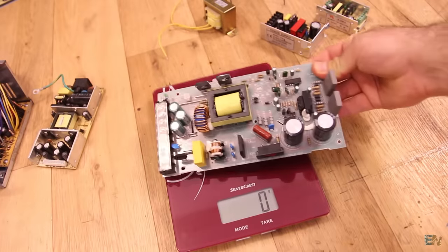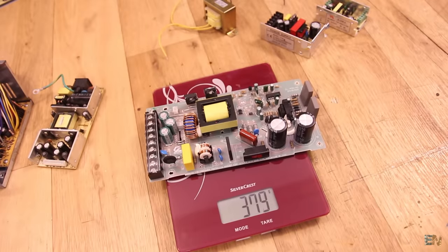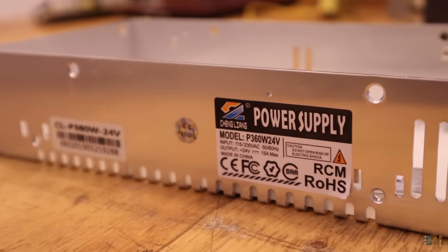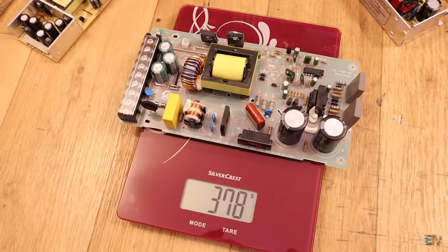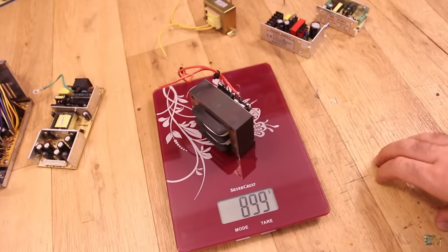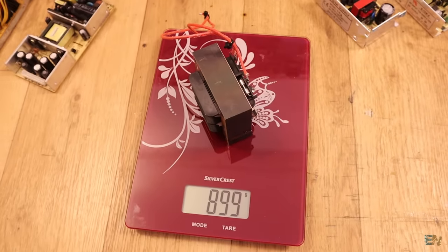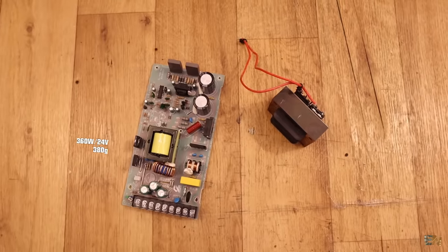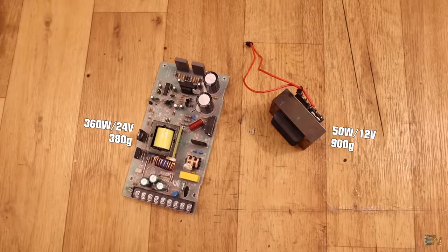And also another comparison, this is the PCB of a 360W supply of 24V and weighs just below 400 grams. But now we have just the transformer of a 15W linear power supply of 12V and it already weighs double the weight but is for 7 times less power.